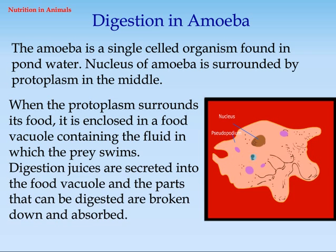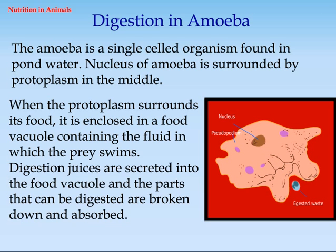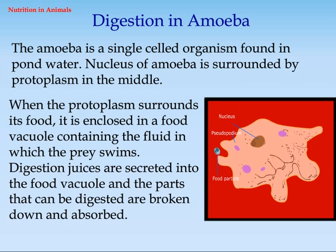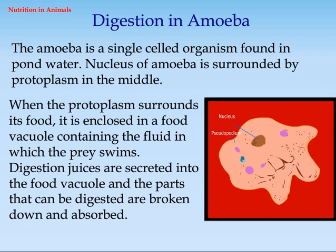Digestion in Amoeba: the amoeba is a single-celled organism found in pond water. The nucleus of the amoeba is surrounded by protoplasm. When the protoplasm surrounds its food, it is enclosed in a food vacuole containing fluid in which the prey swims. Digestive juices are secreted into the food vacuole, and the parts that can be digested are broken down and absorbed.